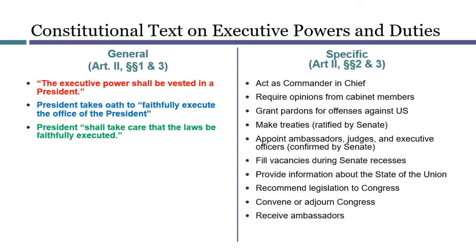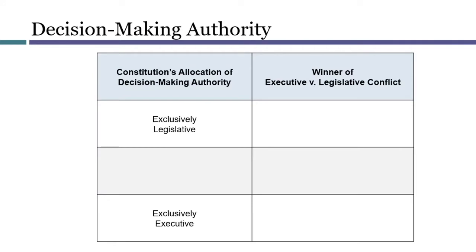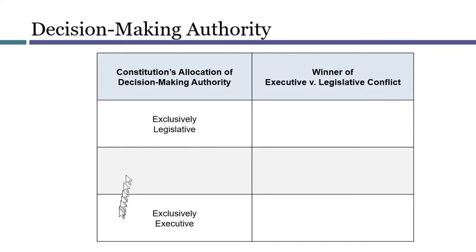Overall, the lack of detail in Article 2 leaves open a lot of questions. A starting point for answering them would be to find out if any powers are exclusively assigned to only one branch of the government. For example, under Article 1, each House of Congress may determine its own rules of procedure. Article 1 also says Congress has the sole power of impeachment. Meanwhile, the President has the exclusive ability to grant pardons and the exclusive authority to issue military orders as commander-in-chief.